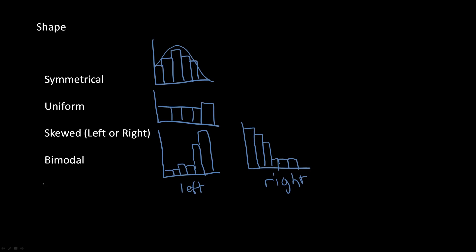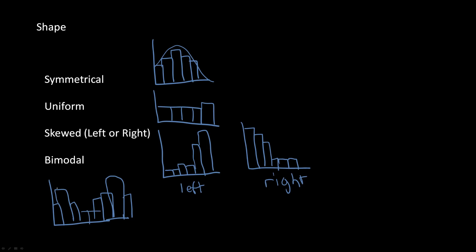The final shape is the bimodal graph. A bimodal graph has two different large peaks. There are two points on the graph with high frequency that are decently far apart from each other — one peak here and another peak there.